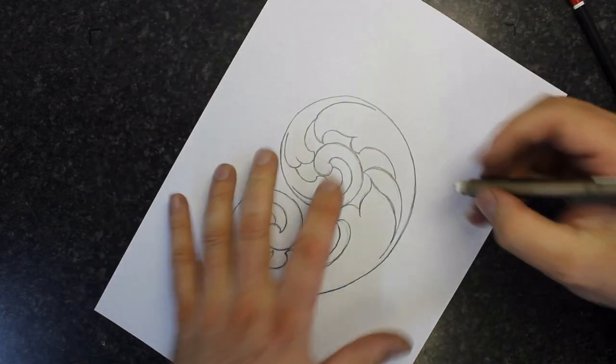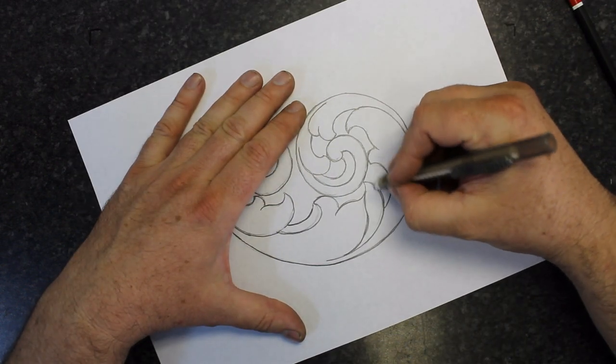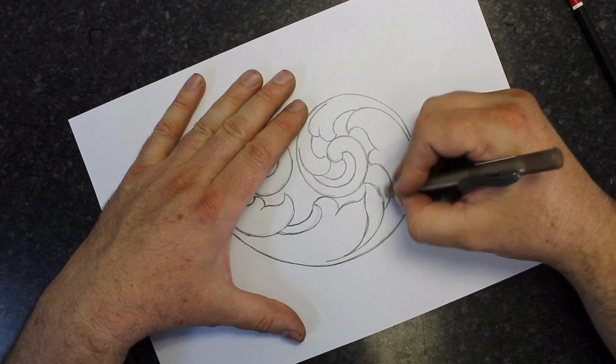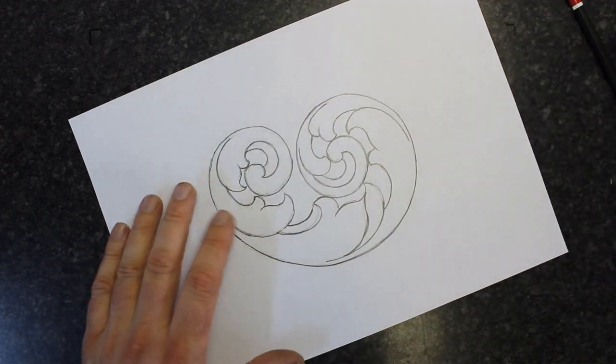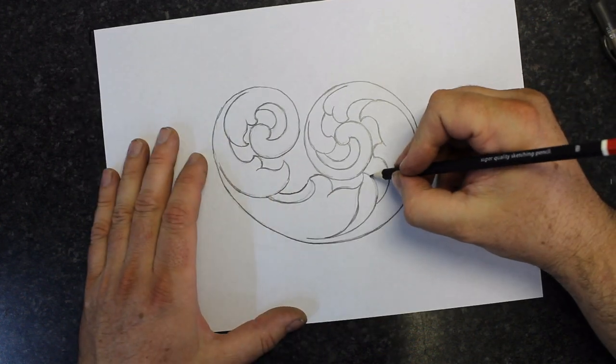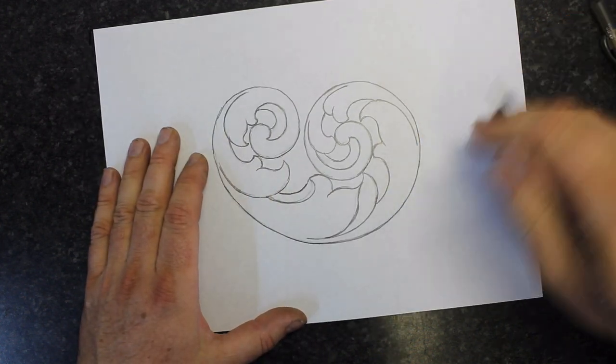Of course with any design sketch you will often need to refine your design a little bit. It's always best to draw softly so you can erase. In this case I needed to draw a little bit darker for filming purposes.